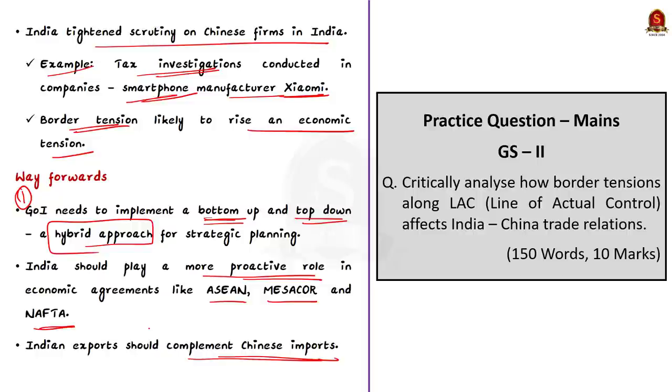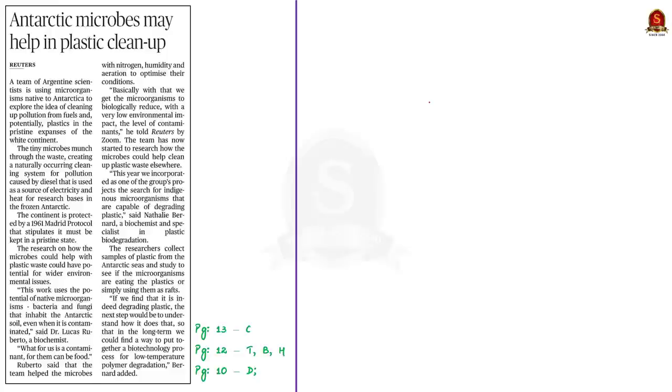This is all about the news article. So, here we discussed about the history of India-China relations. Then we saw about the border tension prevailing between the two. Finally, we discussed in detail about the exports and imports between them. And we saw how India is dependent on China for imports. And finally, we saw some suggestions to reduce the dependency. This can be used to enrich your mains answer. So with this, let us conclude this discussion and take up the next news article.